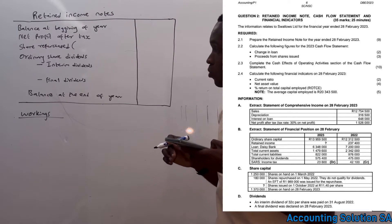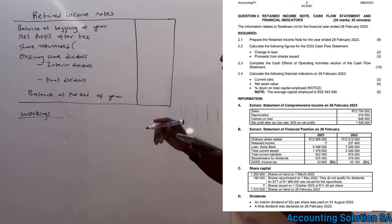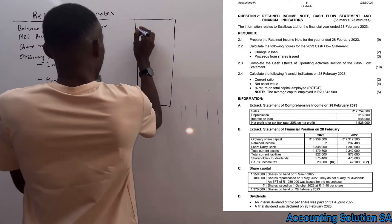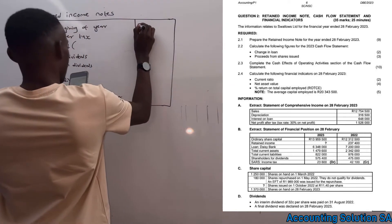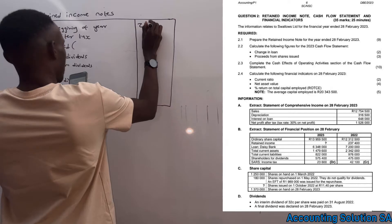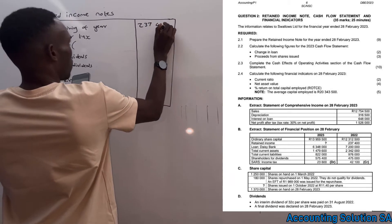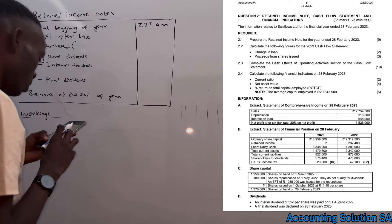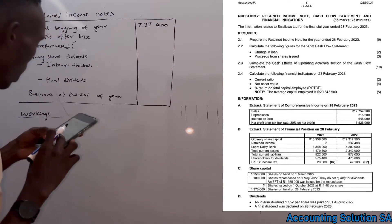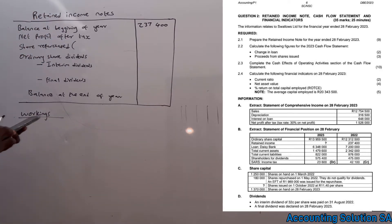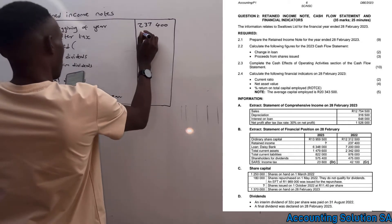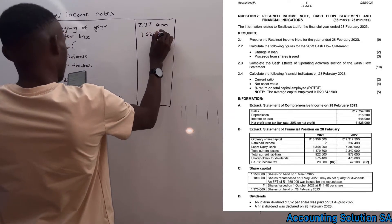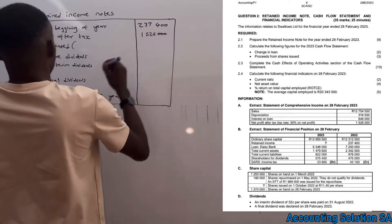The first item is the opening balance at the beginning of the year, which we are given as R237,400. After that we need to adjust for profit after tax, which is also given as R1,526,000.